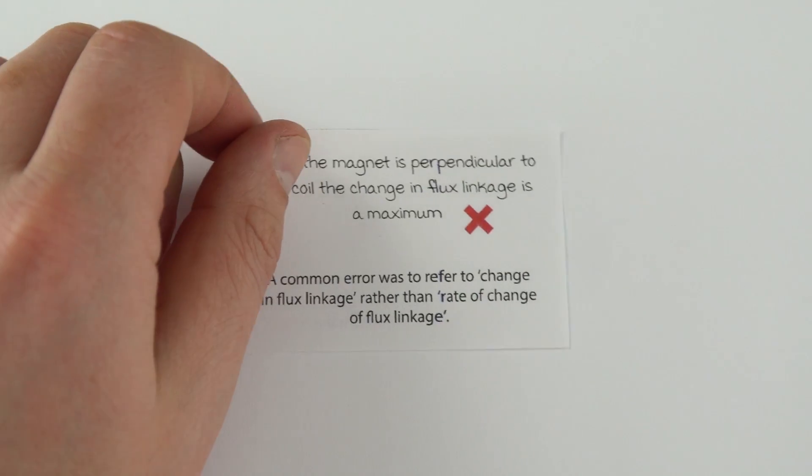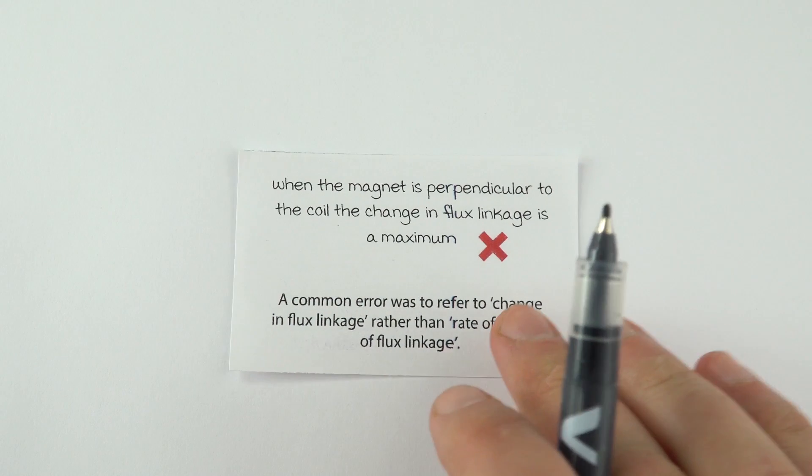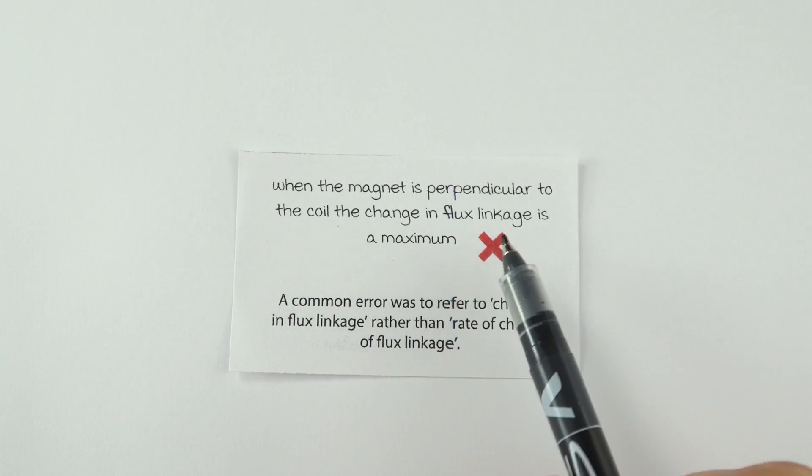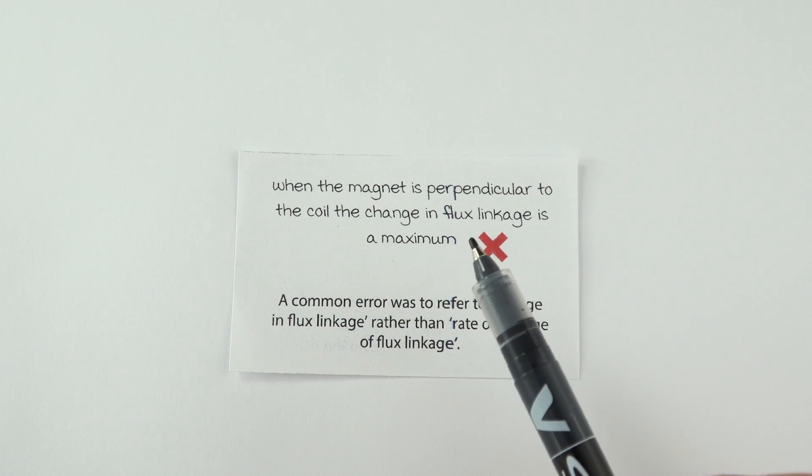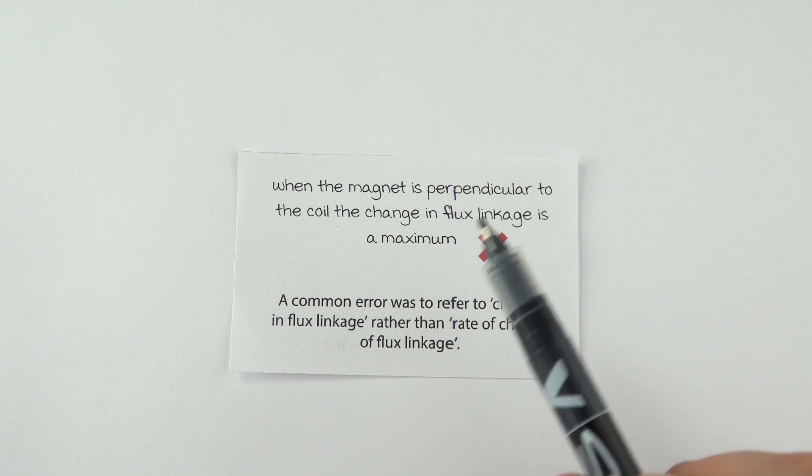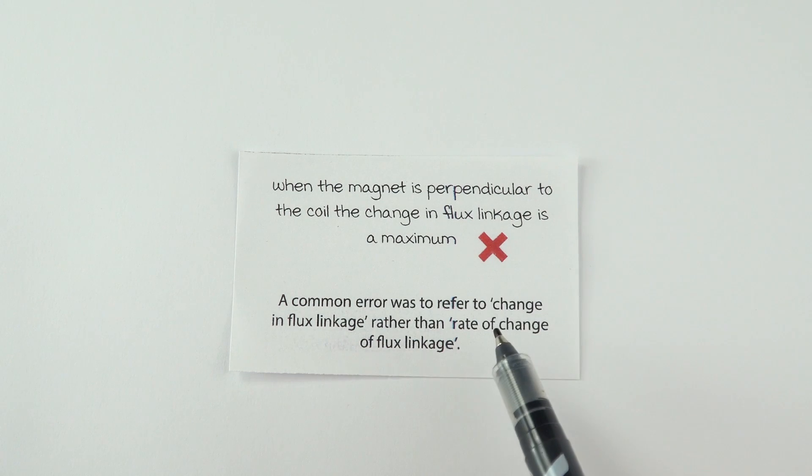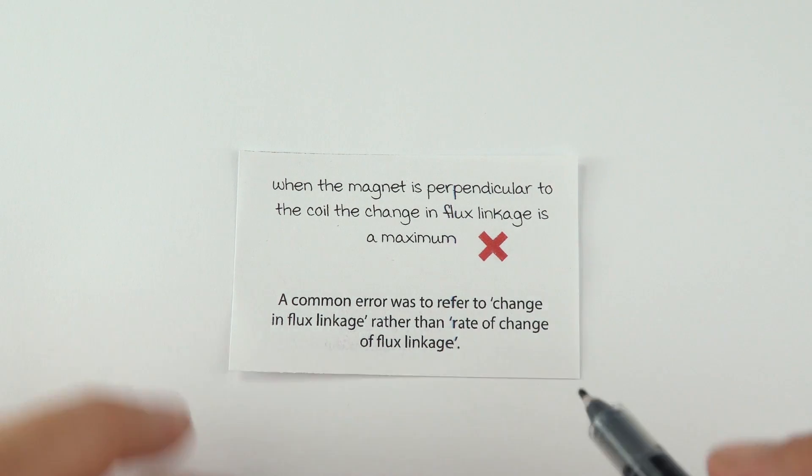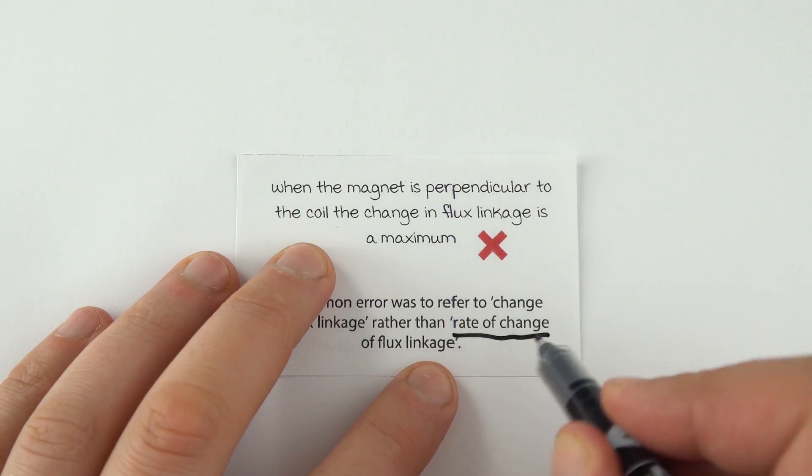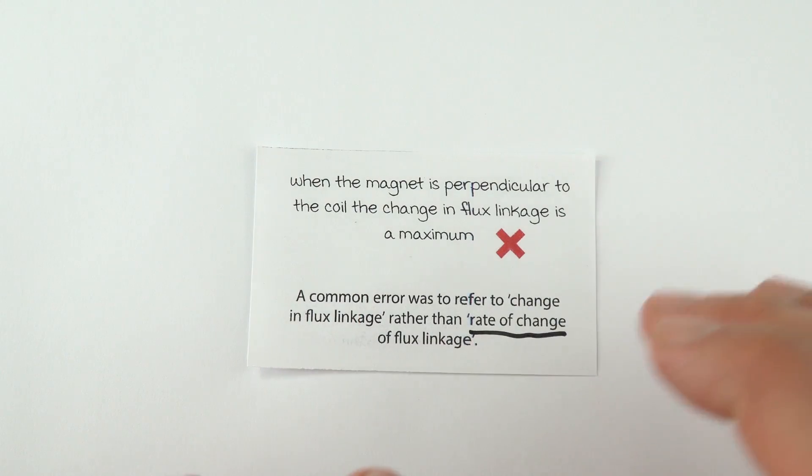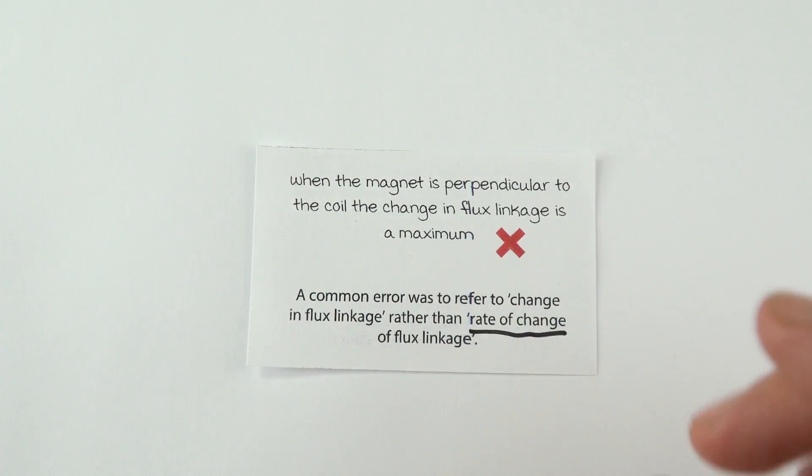This one here is quite specific, but they've mentioned it, so it's worth looking at. It's talking about the change in flux linkage. It's not about how much that changes, it's how quickly it changes. That's really important. So you've got to refer to the rate of change of flux linkage. And that then links to things like the induced EMF.